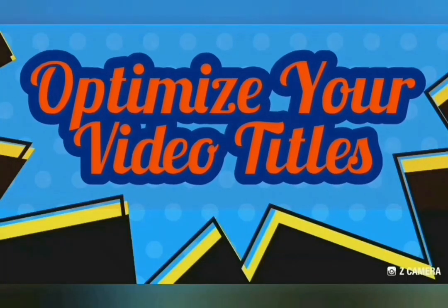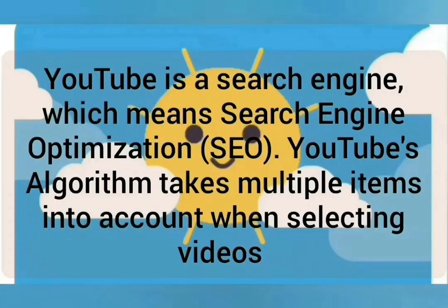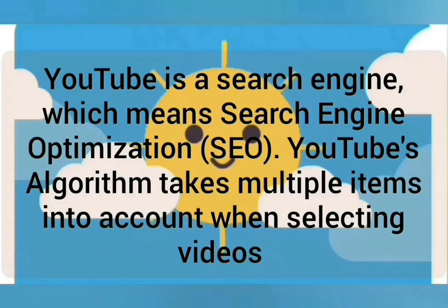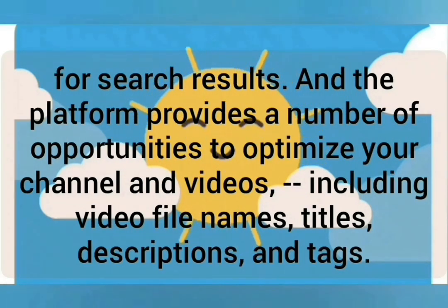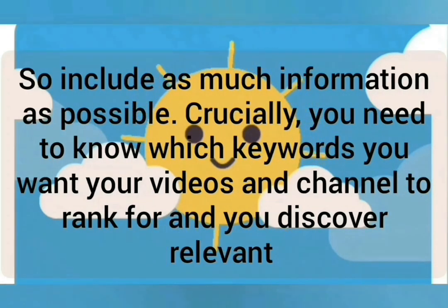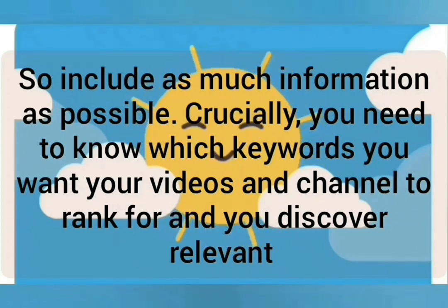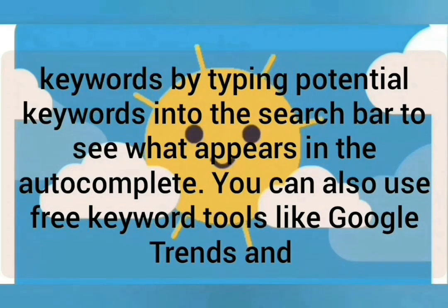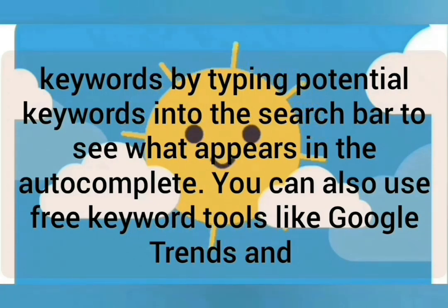YouTube is a search engine, which means search engine optimization, or SEO, matters. YouTube's algorithm takes multiple items into account when selecting videos for search results, and the platform provides a number of opportunities to optimize your channel and videos — including video file names, titles, descriptions, and tags. Include as much information as possible. Crucially, you need to know which keywords you want your videos and channel to rank for. Discover relevant keywords by typing potential keywords into the search bar to see what appears in the autocomplete.